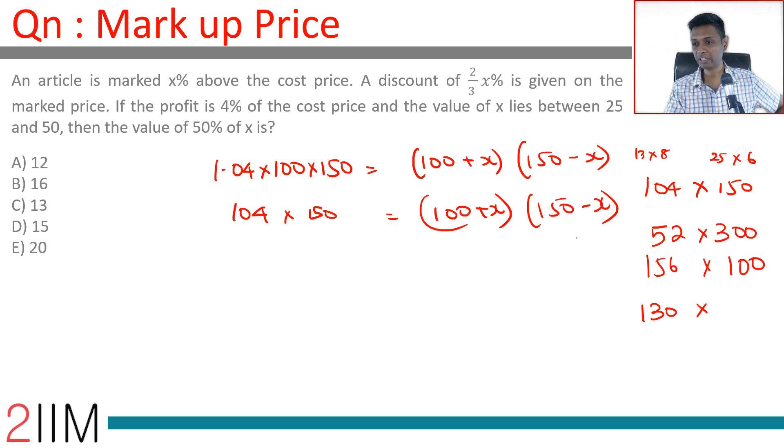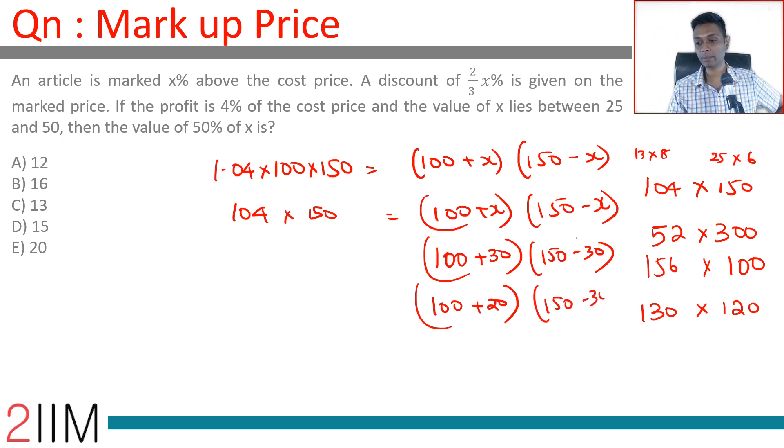What do we have remaining? 13 times 2 times 5, so 4 here and a 5 there. 4 times 5 times 6 is 120. So this is possible. We could have 100 plus 30 times 150 minus 30, which is 130 times 120, or 100 plus 20 times 150 minus 30, 120 times 130.